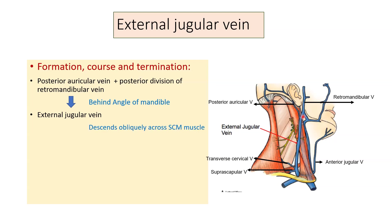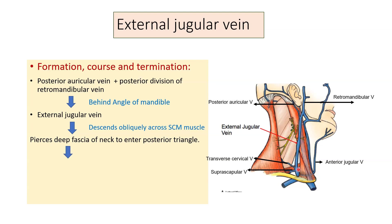After its formation, the external jugular vein descends obliquely across the sternocleidomastoid muscle, as seen in this picture. It then pierces the deep fascia of the neck above the clavicle to enter the posterior triangle of the neck.